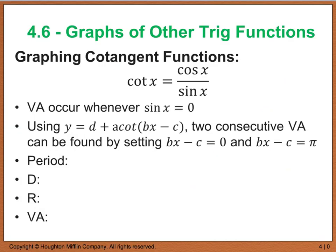Graphing cotangent functions is similar to graphing tangent. Since cotangent equals cosine divided by sine, we have a vertical asymptote whenever sine x equals 0. Using y = d + a*cot(bx - c), find consecutive vertical asymptotes by setting bx - c = 0 and bx - c = pi. The period is also pi, the range is all real numbers, and vertical asymptotes occur at x = n*pi.